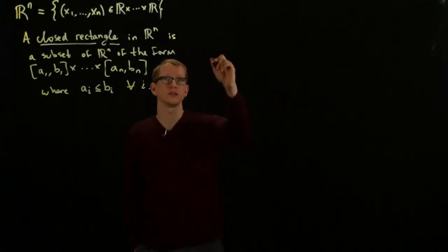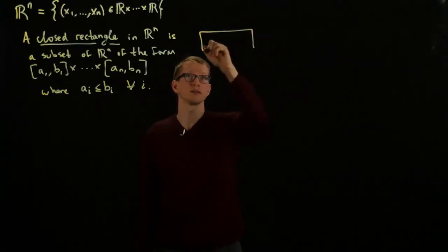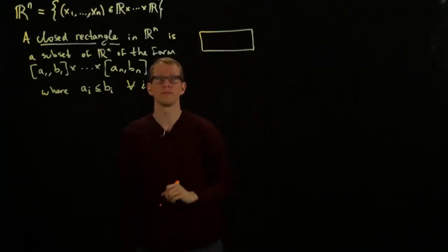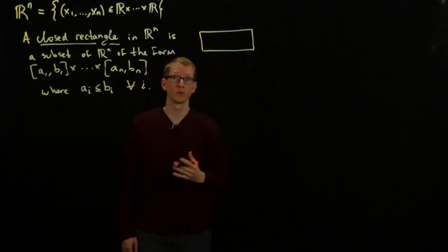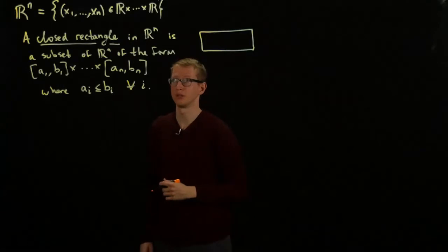So a closed rectangle looks exactly like what you might think. It's just a little box. And we include all of the what we might call the boundary. But we should make the word boundary mathematically precise, which we will in a moment.